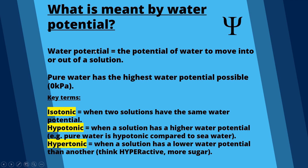Water potential is the potential of water to move into or out of a solution. Pure water has the highest water potential, but it may trip students up — the highest possible water potential is zero kilopascals. So pure water is 0 kPa and anything with a lower water potential has a negative number, like minus one or minus two.